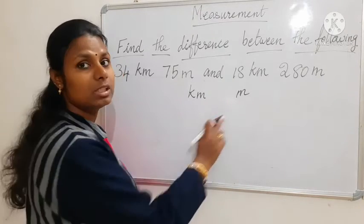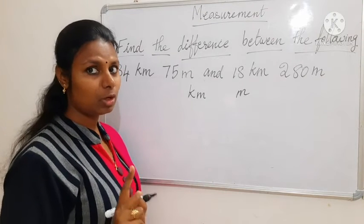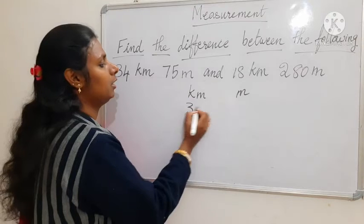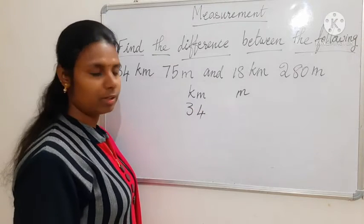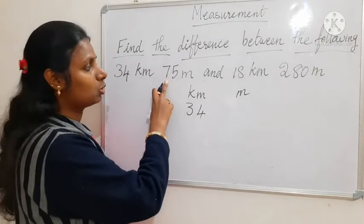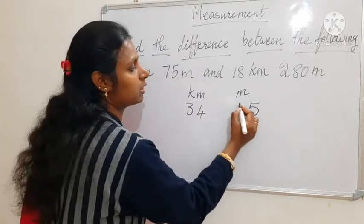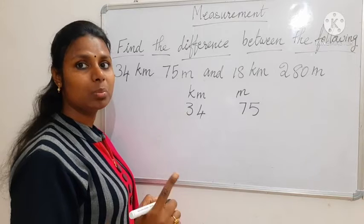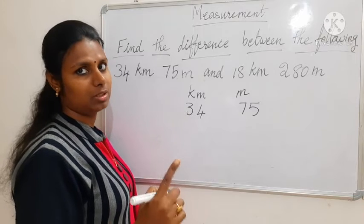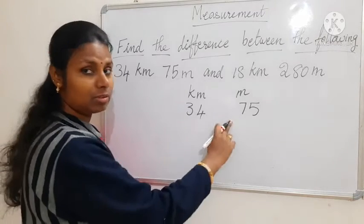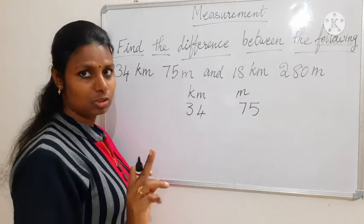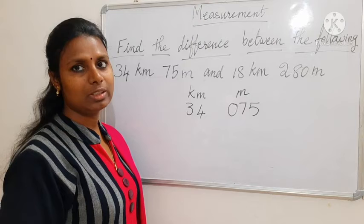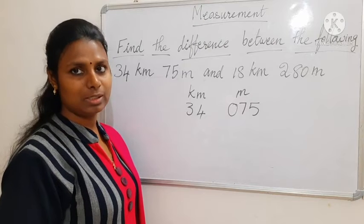So how many digits are you supposed to write? 3 digits. Because 1 km is equal to 1000 m — in 1000, there are 3 zeros, so we have to write 3 digits. In km they have given 34, so we have written that. And in m, 75 — so 7, 5. We already have 2 digits, so for the 3rd digit we will write 0, making it 075.